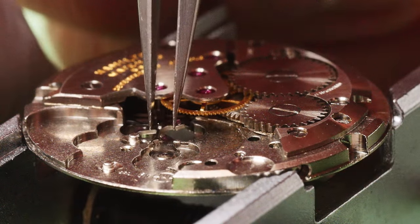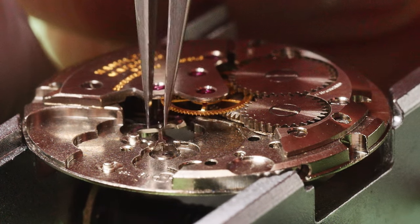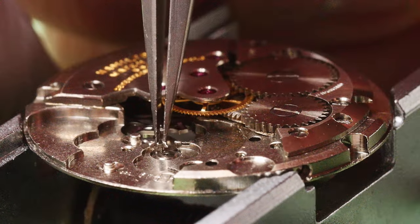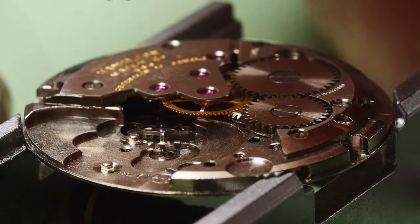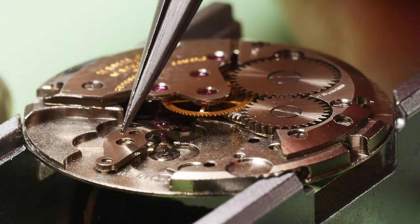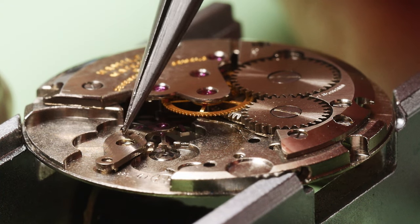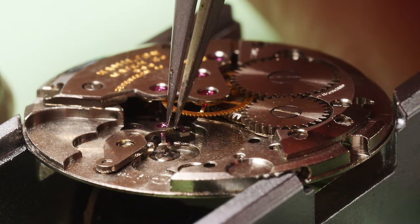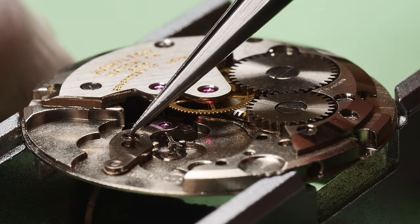Wrapping up the escapement, the pallet fork is refitted. This component is what makes the ticking noise we all know and love as it stops and releases power between the balance wheel and the escape wheel. The pallet cock holds the top of the pallet fork perfectly perpendicular to the main plate. This allows the pallet fork to swing on the same plane as both the escape wheel and the impulse jewel on the balance wheel.